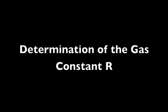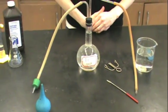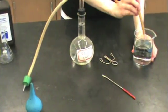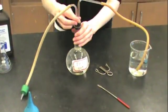Here we will show you how to perform the experiment for the determination of the gas constant R. You will need a Florence flask filled to about an inch from the top with water, a 400 milliliter beaker filled with water, and a blue bulb.